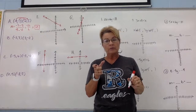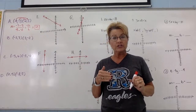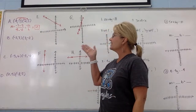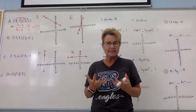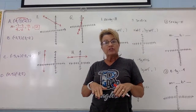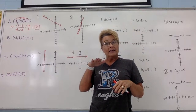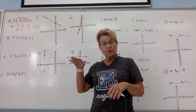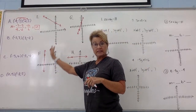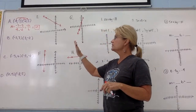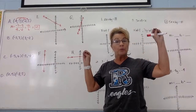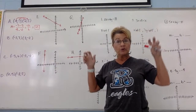Negative 2 as a slope can be written as negative 2 over 1, meaning your rise is negative 2 and your run is positive 1. But right now let's focus on figuring out slope using just two points in a coordinate plane.